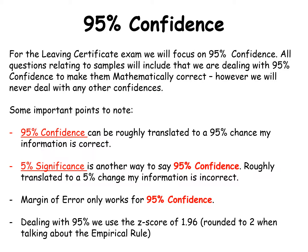Think of it this way: if there's a 95% chance I'm right, there's a 5% chance I'm wrong — that's basically what 95% confidence and 5% significance are saying. The margin of error only works for 95% confidence, and dealing with 95% we use a Z score of 1.96, which we'd round to 2 with regards to the empirical rule, but we are now more accurate going to 1.96.